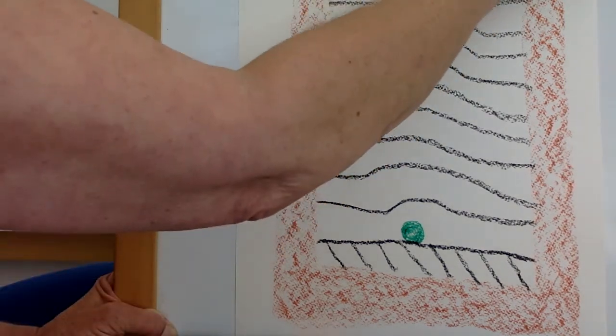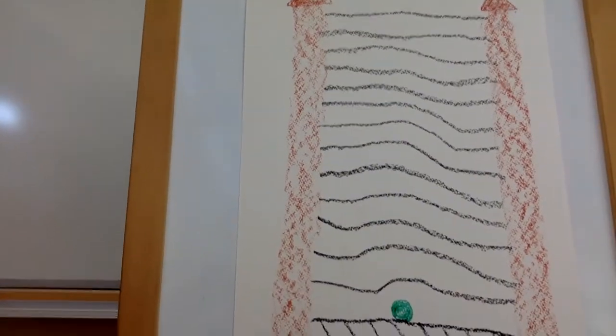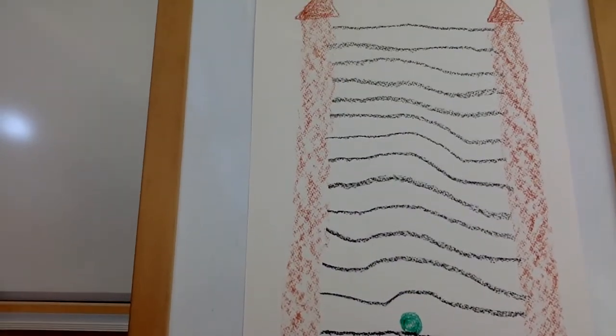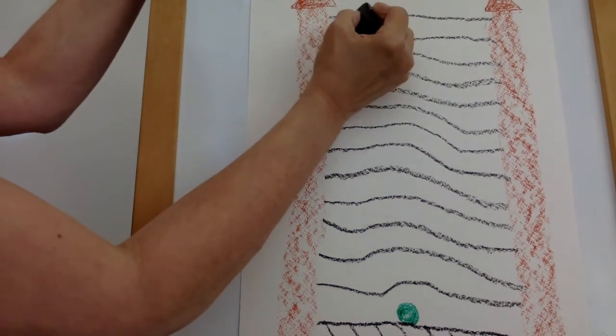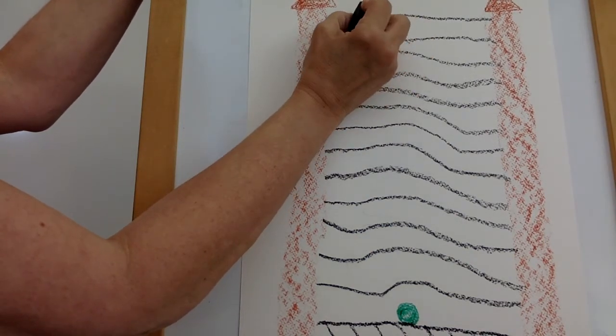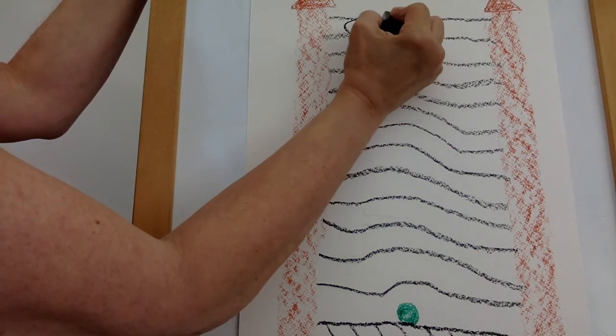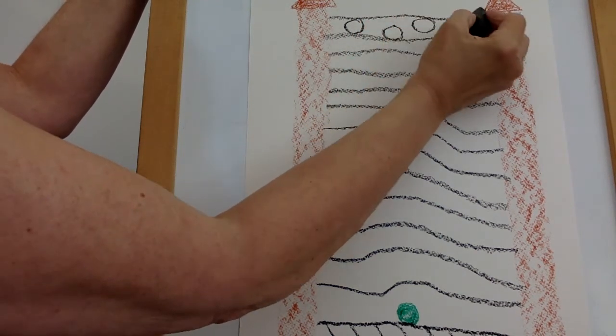And one more. There we go. All the way to the top. Now I'm going to make some designs in my bed. I might use some different colors. I'm going to make circles in this one.